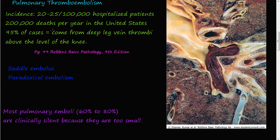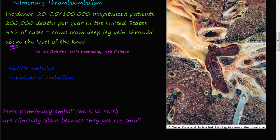95% of cases come from deep leg vein thrombi above the knee, according to Robbins Basic Pathology, 9th edition, page 99. Interestingly, hospitals often put compression devices on the lower leg below the knee to help prevent deep leg blood clots, but 95% of cases originate above the knee, where these devices are typically not applied — suggesting a possible need for change in practice.